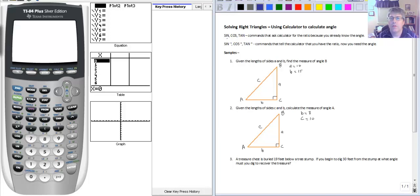So we know that the sine, cosine, and tangent commands are the commands that ask the calculator for the length of a side because we already know the ratio. The calculator knows the ratio and it knows the angle.